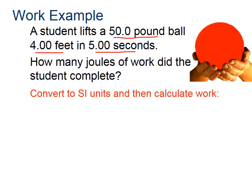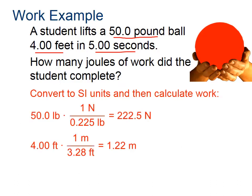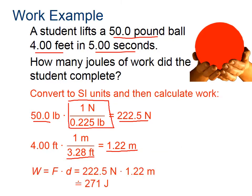So in this case, we have 50 pounds, and a newton is equal to about a quarter of a pound. So 50 pounds is equal to 222.5 newtons. And one meter, there are 3.28 feet, so four feet is 1.22 meters. So we take those forces, those distances, and multiply them, and we get 271 joules.